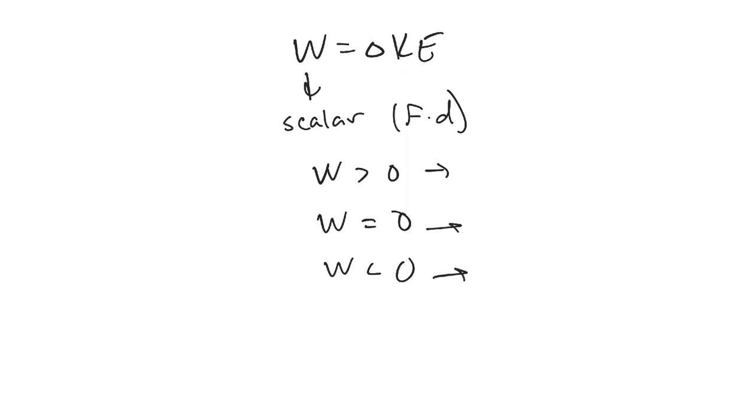And here's what each of these cases mean. If your work is greater than zero, you are adding energy to a system. So, for example, if I do work on a box and I do positive work, I'm going to add energy to it. And what that does is it speeds it up, because we're talking about kinetic energy specifically today.